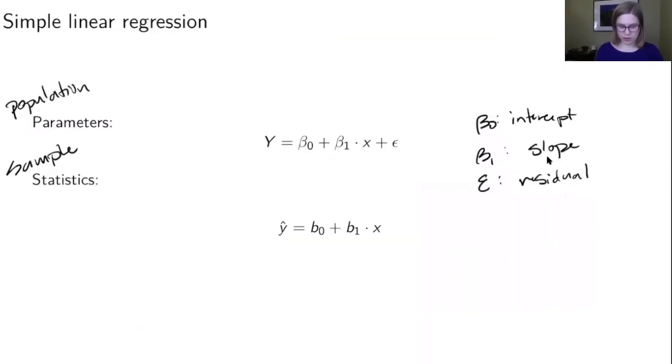Those are our main parameters. When we're thinking about our sample statistics, our best guess from the data we actually have, we've got b₀, the sample intercept, and b₁, the sample slope. There's no ε here because we've got ŷ, the predicted value—just the point right on the line.